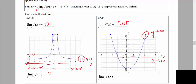Now doing the same for negative infinity — going to the very far left end of the graph — we see an arrow pointing up. It's not leveling off; it's approaching infinity. So the limit here also does not exist. As x approaches negative infinity, y is approaching positive infinity, so the limit does not exist. Infinity is a concept; it's not a particular y value.